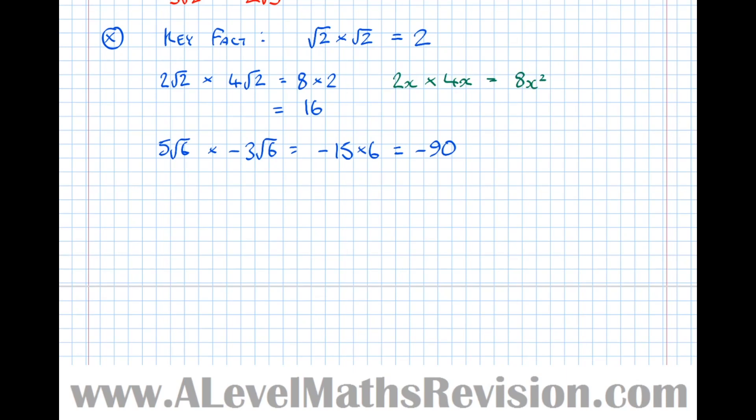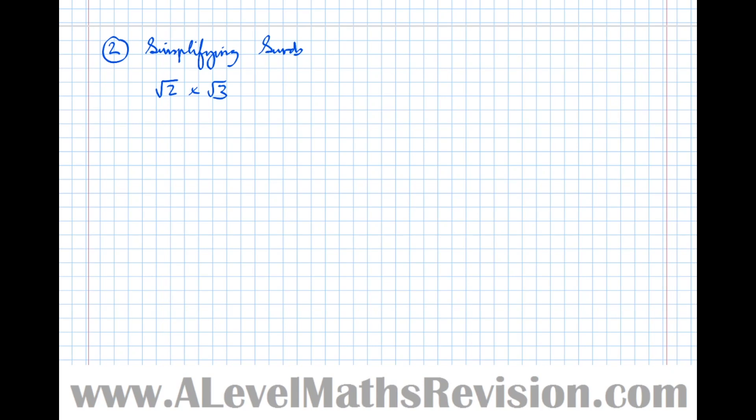Let's do one more example. Let's do 2 plus root 3 times 4 plus 3 root 3. So to do that, we'll tackle it just like a normal question. So we've got 2 times 4, which is 8. Plus, and from the rules we just learned, that becomes 6 root 3. Plus 4 root 3. We couldn't simplify any further.